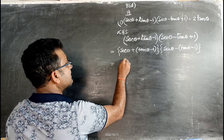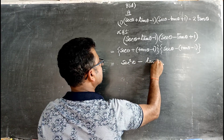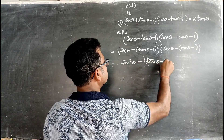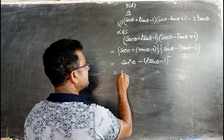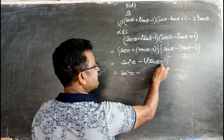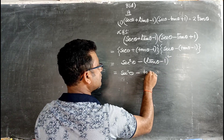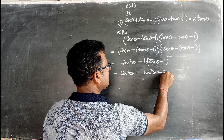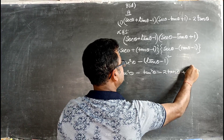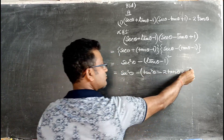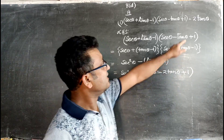So A + B times A - B equals A² - B², giving sec²θ - (tan θ - 1)². Now expanding (tan θ - 1)² using the formula a - b whole square: a² - 2ab + b², we get tan²θ - 2tanθ + 1.